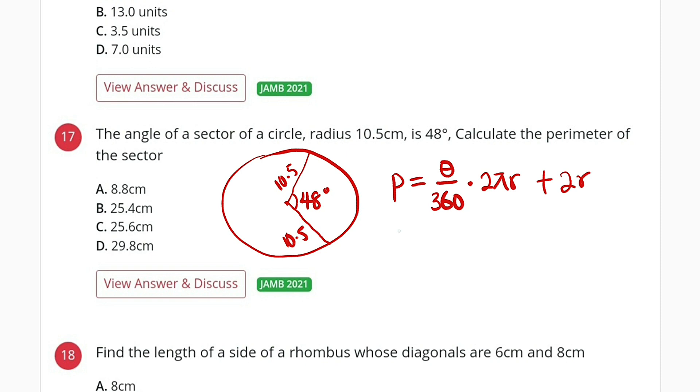Okay, now let's substitute. P will be equal to 48 divided by 360 degrees, multiply by 2, π - we use 22/7 commonly in Nigeria - multiply by 10.5, then plus 2 multiply by 10.5.